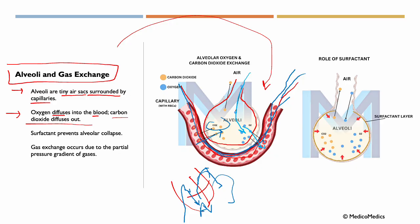Now, we have another important structure which is surfactant. It prevents the alveoli from collapsing. Here you can see an illustration of the surfactant layer. Gas exchange occurs due to the partial pressure gradient of gases.